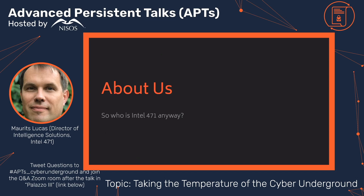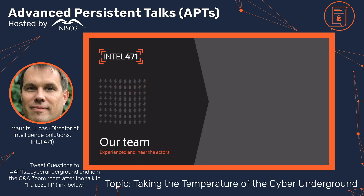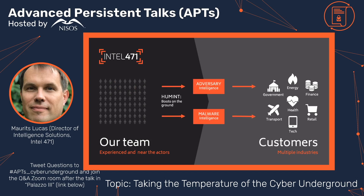A little bit about Intel 471 — who are we and what do we do? We're a cyber threat intelligence company and we focus on two things: adversary intelligence and malware intelligence. We collect that intelligence using a team of experienced researchers dotted around the globe, focusing on actors and their communications on one hand, and on the tools and tooling they're using — malware and malware infrastructures — on the other. We bring that intelligence to customers across multiple industries globally.